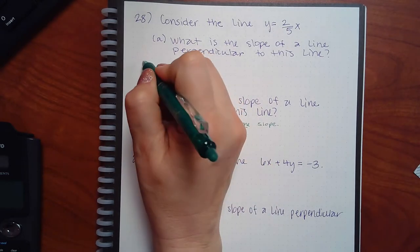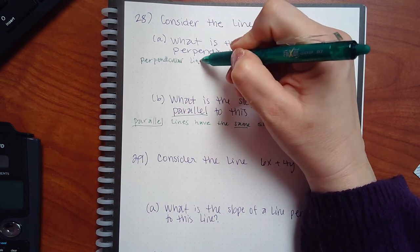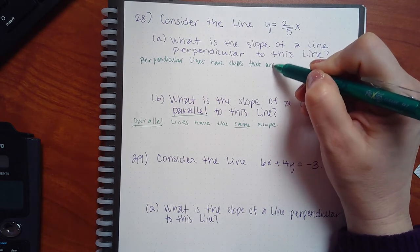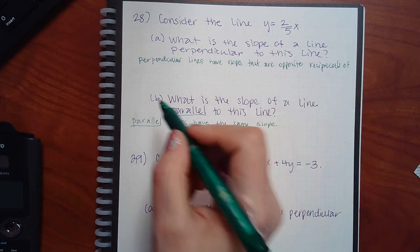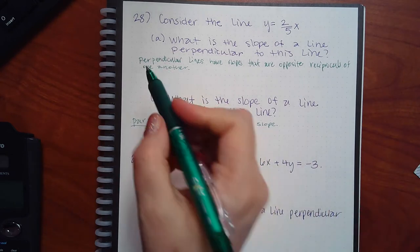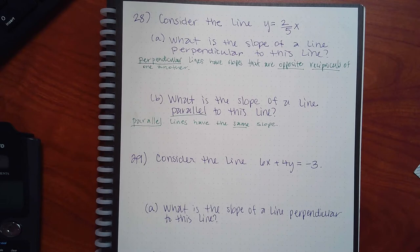Perpendicular is a little bit different. Perpendicular lines have slopes that are opposite reciprocals of one another. So there are two changes you make: 'opposite' means different sign — if yours is positive, the perpendicular one will be negative, or vice versa. And 'reciprocal' means you flip that fraction.